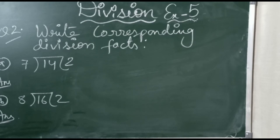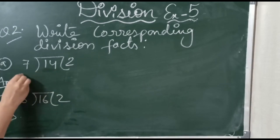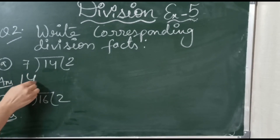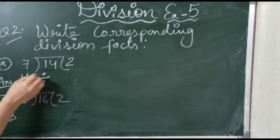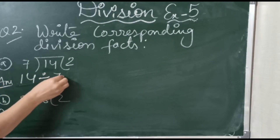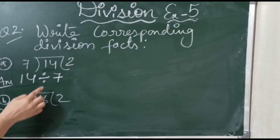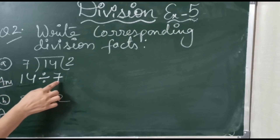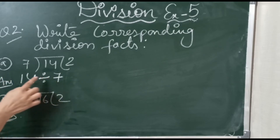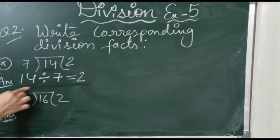Here we write 40 inside as the dividend, use the division sign, and write 7 as the divisor. After dividing, 14 comes 2 times in the table of 7. That is the division fact.